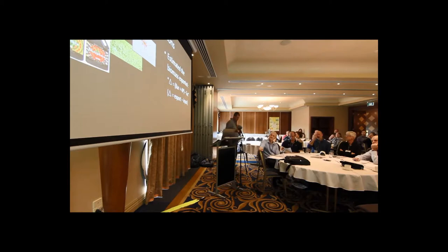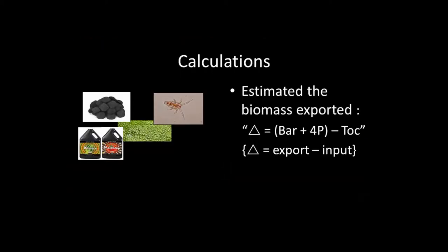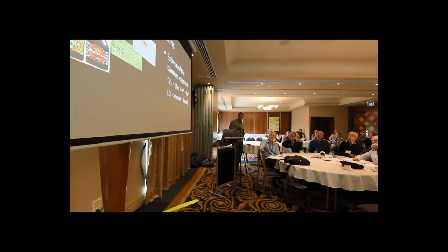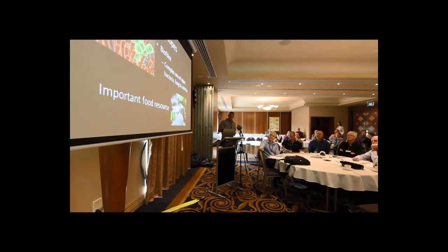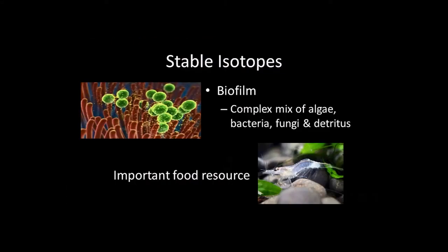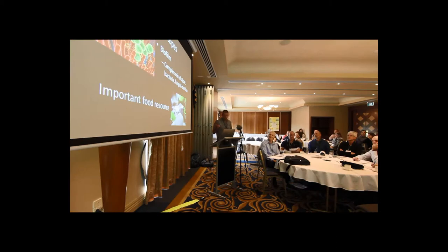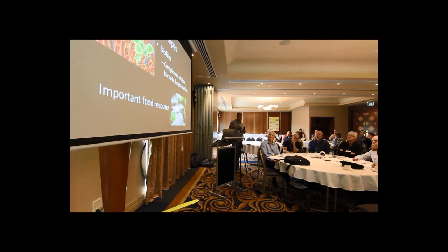We calculated what was coming into the forest at Tocumwal, then subtracted that from what was flowing out — the sum of measurements at Barmah Forest and Fort Post — giving an estimate of what was being exported or contributed to the water column from Barmah Forest itself. We also did stable isotopes on biofilms. Biofilm is a complex mixture of algae, bacteria, fungi, detritus and other material — it's actually a very important food resource. Things like chironomids and shrimp graze on this matrix, incorporating whatever food is in the biofilm into their own bodies.